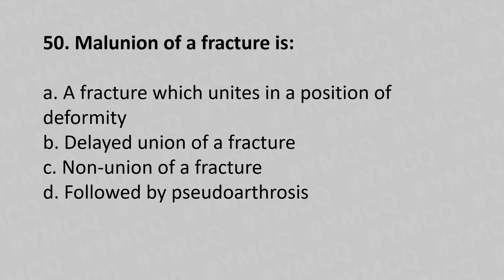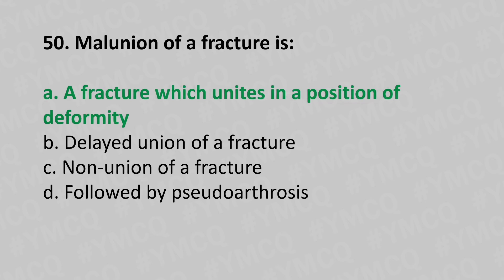Moving to our 50th question: malunion of a fracture is option A fracture which unites in the position of the deformity, option B delayed union of the fracture, option C non-union of the fracture, option D followed by pseudoarthrosis. The answer is option A fracture which unites in the position of the deformity.